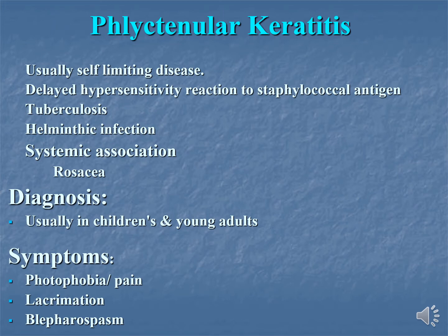Phlyctenular keratitis is a self-limiting disease caused by delayed hypersensitivity reaction to staphylococcal antigens, usually present in developed countries. In developing countries where tuberculosis is prevalent, one must also look for tuberculosis and helminthic infections. Systemic associations include rosacea. This disease is usually present in children and young adults. Patients present with pain, photophobia, lacrimation, and blepharospasm.